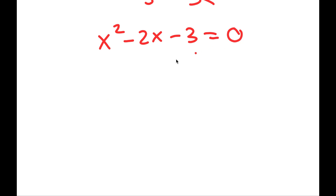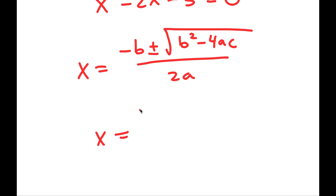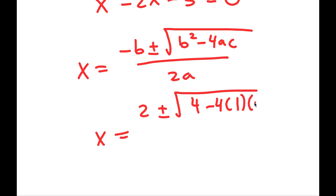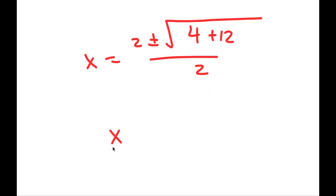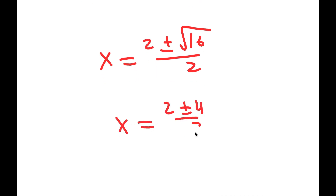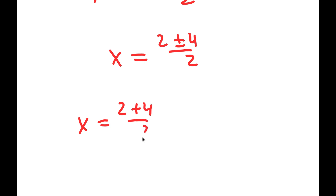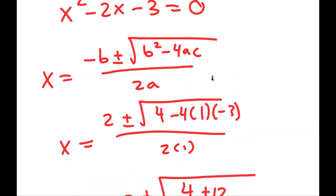Using the quadratic formula — x = (negative b ± √(b² - 4ac)) / 2a — I get x = (2 ± √(4 + 12)) / 2 = (2 ± √16) / 2 = (2 ± 4) / 2. This means x = (2 + 4) / 2 = 3, and x = (2 - 4) / 2 = negative 1. So these are my two solutions.